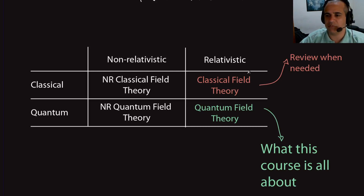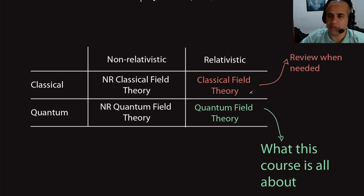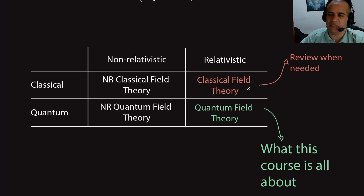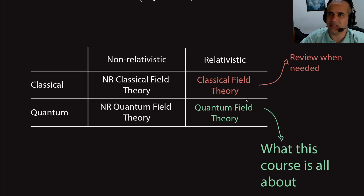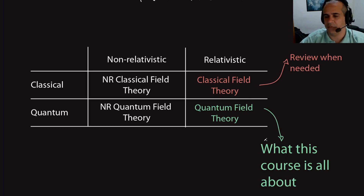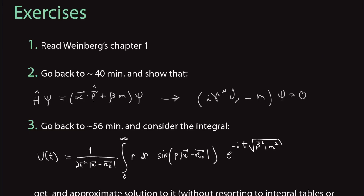I will introduce concepts from relativistic classical field theory as needed — this is not a classical field theory course, but I will review what's necessary. The exercises for today are: read Weinberg's Chapter 1 for the historical development; show how to go from the α, β matrices to the Dirac gamma matrices; and evaluate the causality-violating transition amplitude integral using the stationary phase (saddle point) approximation.